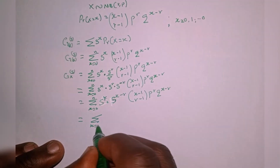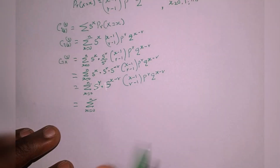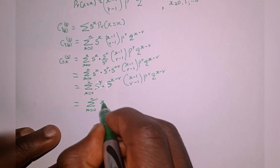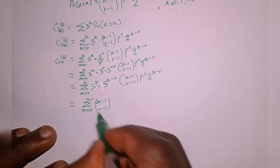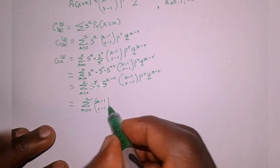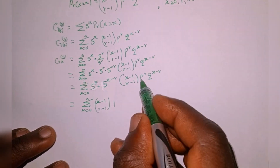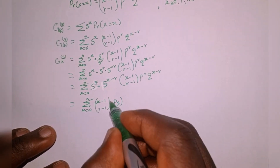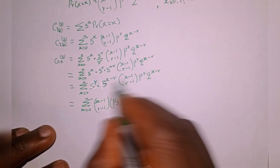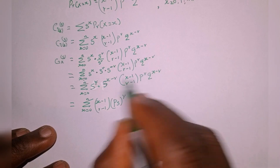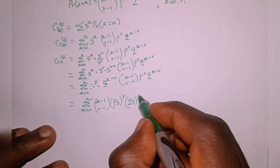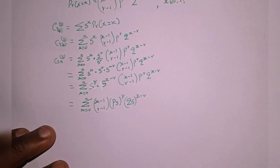This equals the summation as x goes from zero to n. We write x minus one combination r minus one. This and this have the same power, so we multiply s by p to give ps, all raised to the power of r. Then we multiply these two together since they have the same power: q multiplied by s gives qs, raised to the power of x minus r.